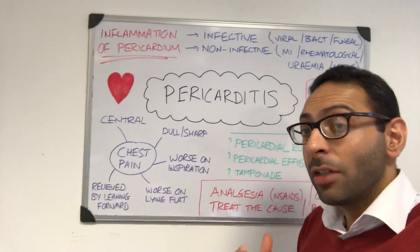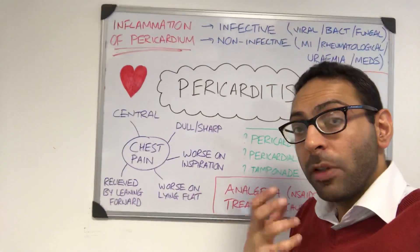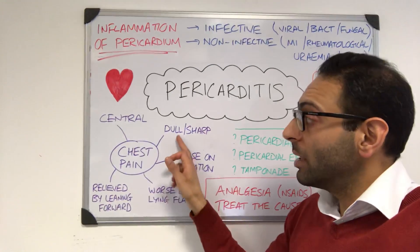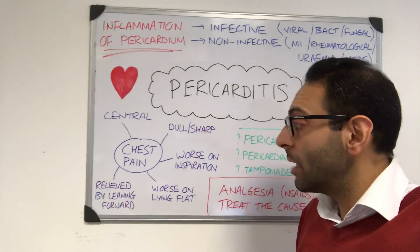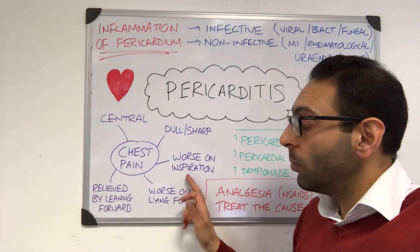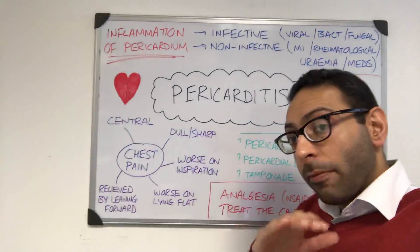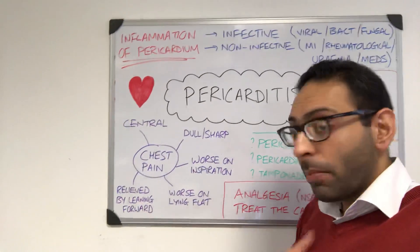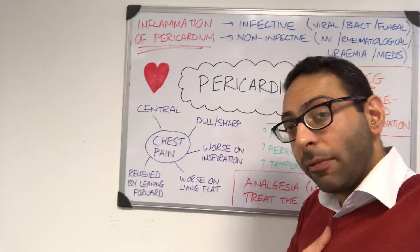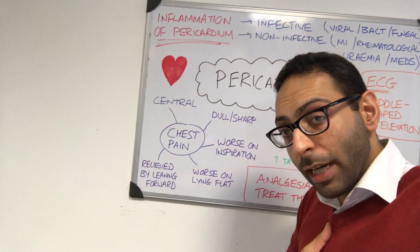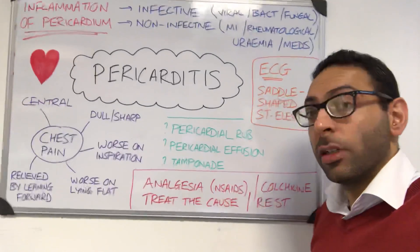In terms of presentation, chest pain is usually central, so it can be confused with MI and ischemia. It can be dull or sharp. Classically, it is worse on inspiration and worse on lying flat, but relieved by leaning forward — picture someone leaning forward to get relief, and that pericarditis image sticks in your mind.